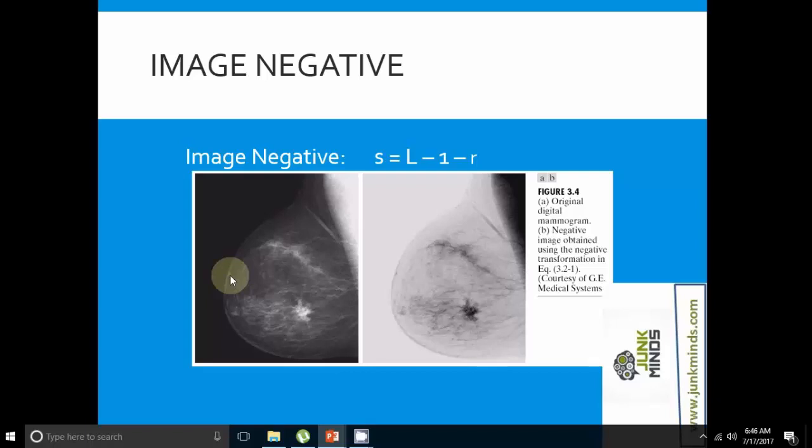Reversing the intensity levels of an image is suitable for enhancing white or gray detail embedded in dark regions, especially when the black area is dominant. The original mammogram shows a small lesion of the breast, whereas the negative image gives better vision to analyze the image. This is how point processing is used to better analyze images.